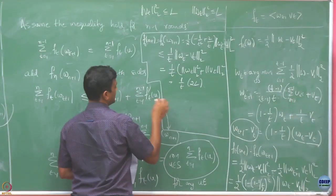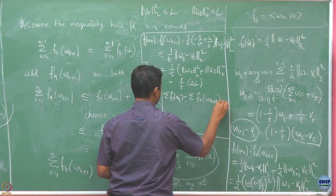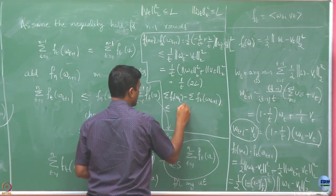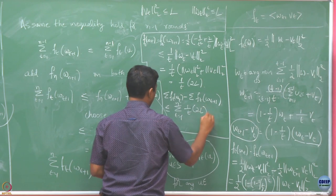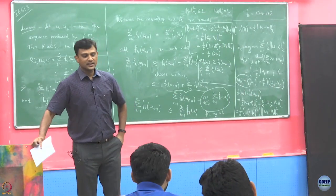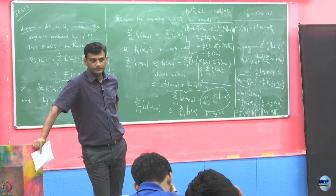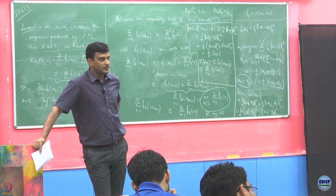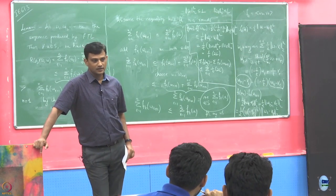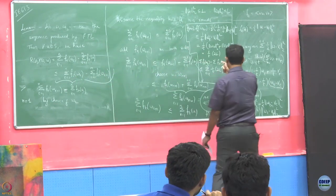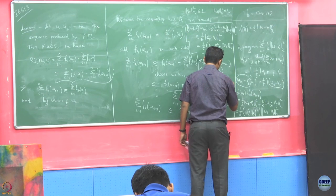Now I will take the summation on both sides — that is what I am finally interested in. The summation from T equals 1 to n of 1/T times 2L. The bound on the summation of 1/T from 1 to n is log n. Why? Because the integral of 1/x is log x, and here we are doing discrete but can make it continuous to get an upper bound. So this gives me 2L log n.